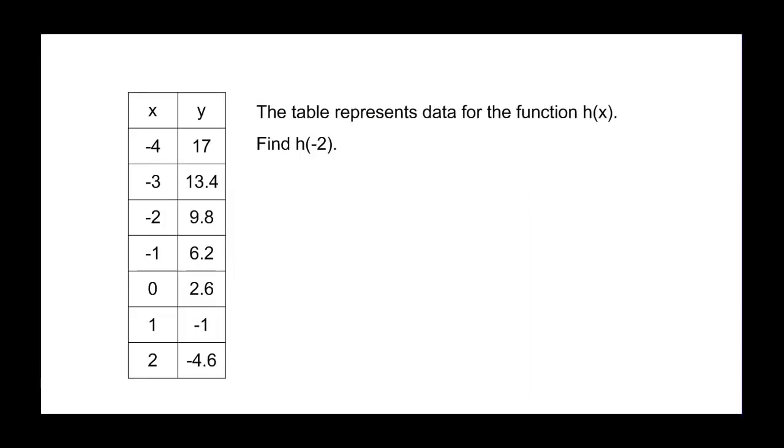We can also use function notation to talk about a table. This is the h function. And we could say here y = h(x) if we really wanted to. And it's asking me to find h(-2). Well this is my x. So I go to -2. Negative 2 is my x. And I find out that it's equal to 9.8.